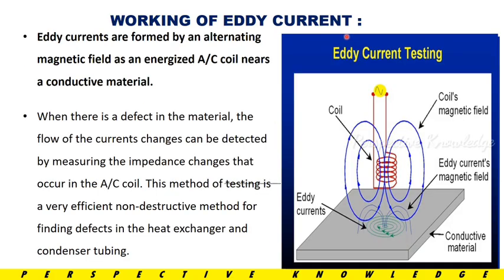The working of Eddy Current. Eddy Current is formed by an alternating magnetic field as an energized AC coil near a conductive material. We have a working diagram: we wind up the coil and supply electric power, generating a magnetic field. We supply the Eddy Current magnetic field to the coil. That generates a magnetic field, and we test the conducting material. The magnetic field forms the Eddy Current in circular shapes, and we receive the signals. If we have any defects in the material, we will identify them.